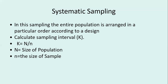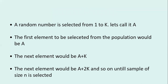To do systematic sampling properly, I calculate the sampling interval, denoted as K. The sampling interval is calculated as total population divided by the number of samples required. Here that is 1000 divided by 50, which equals 20. So my sampling interval K equals 20. Then I select a random number between 1 and 20.